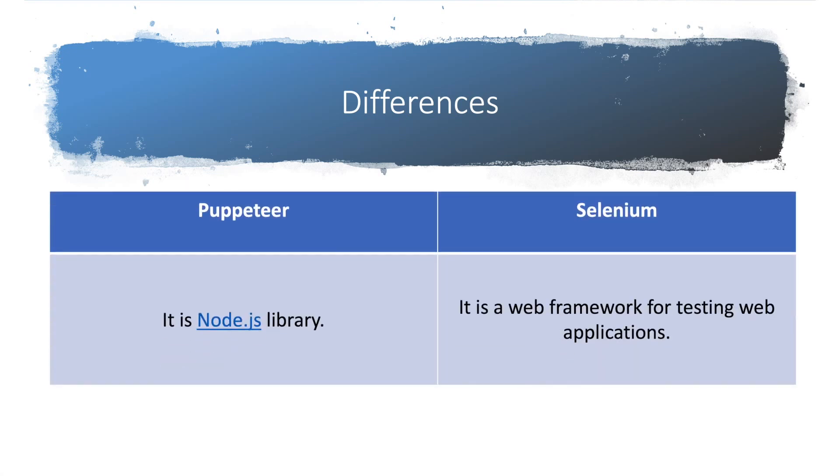Puppeteer is a Node.js library, and as we've seen it was added recently. Selenium is a web framework for testing web applications. It's a completely different framework made just for automation purposes.